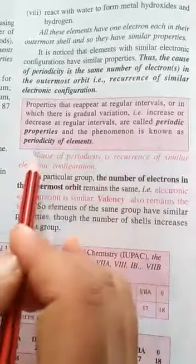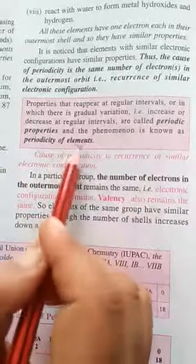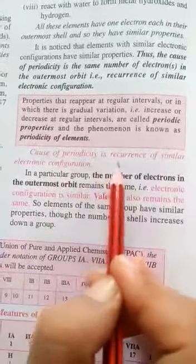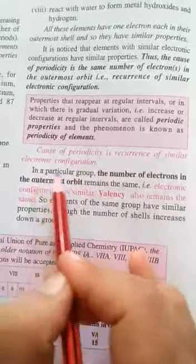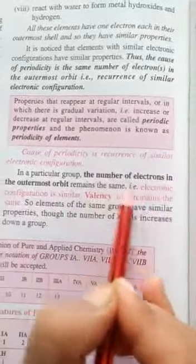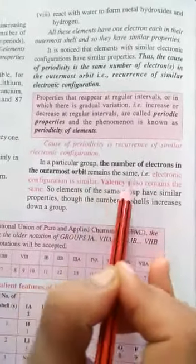And the phenomenon is known as the periodicity of the elements. Cause of periodicity is the recurrence of similar electronic configuration, wherein in a particular group the number of electrons in the outermost orbit remains the same.